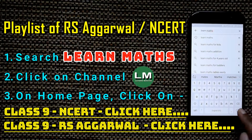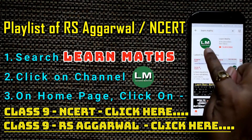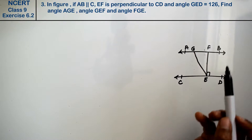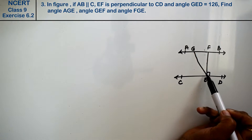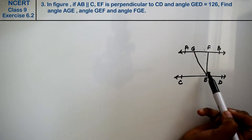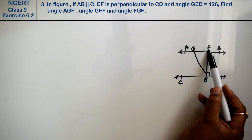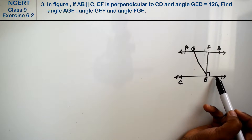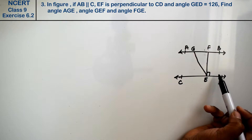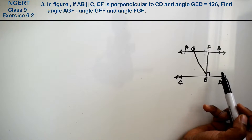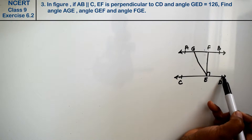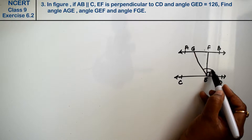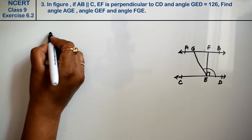Let's do question number 3 of Exercise 6.2, that is Lines and Angles. In the figure, AB is parallel to CD, EF is perpendicular to CD — meaning a 90 degree angle. GED is given as 126 degrees.